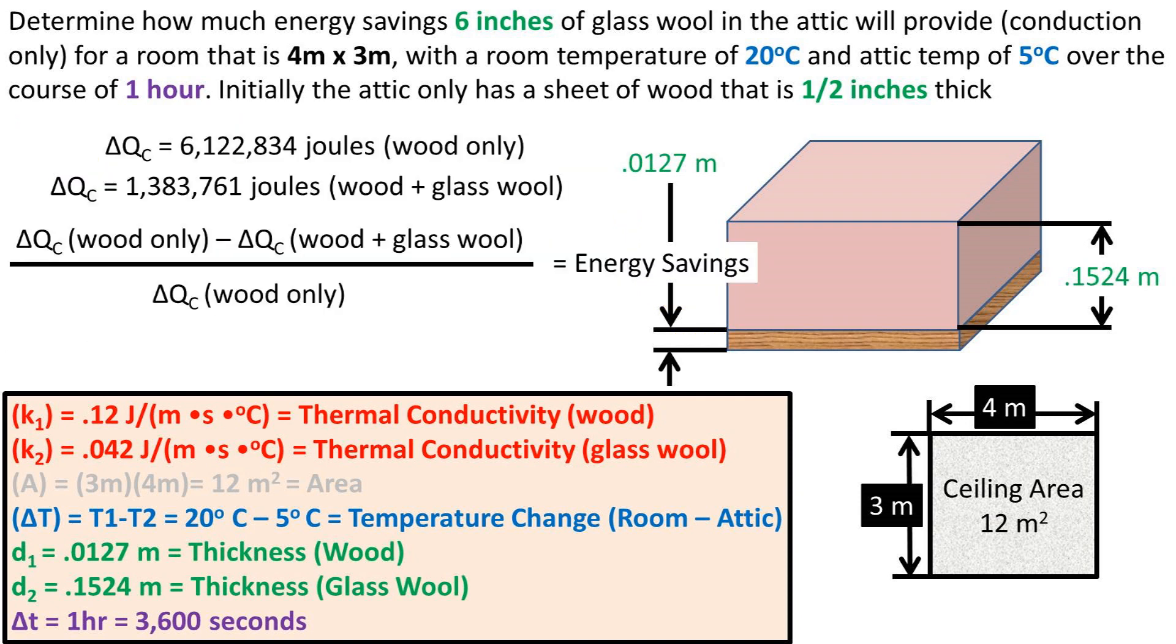To finish off this video, we will need to determine the energy savings. To do so, we can use the equation Q from the wood only minus the Q from the wood and glass wool divided by the Q from the wood only. Plugging in our values, we get a 77% energy savings.